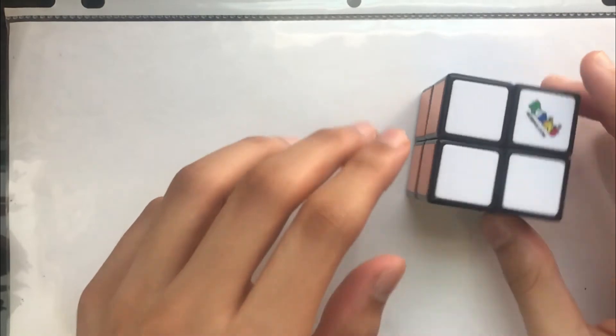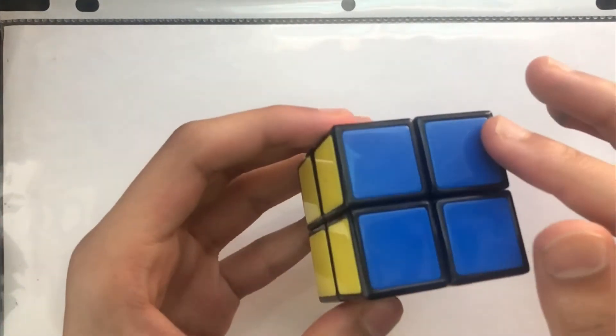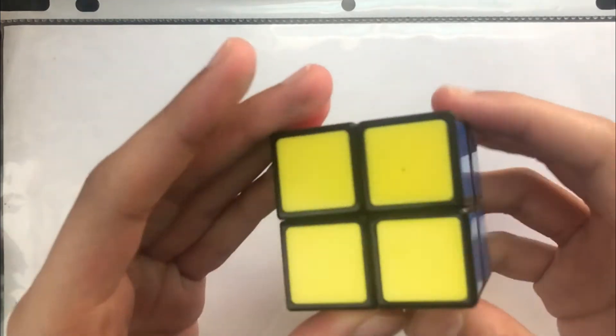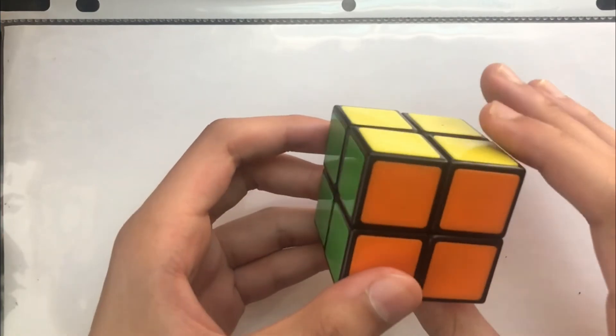So the first thing we need to know is that the 2x2 has 8 corner pieces. So we see 1, 2, 3, 4 and then 4 in this layer. So we have a total of 8 corner pieces with no center pieces and no edge pieces.